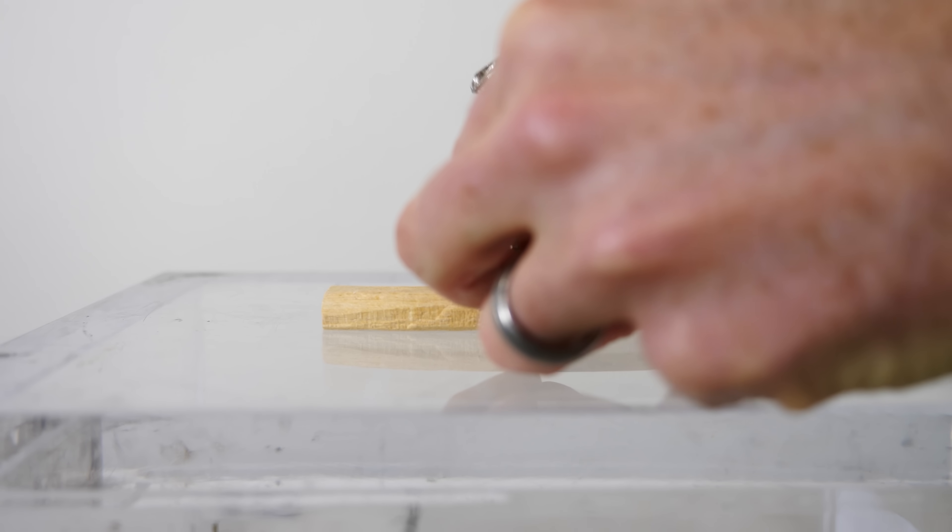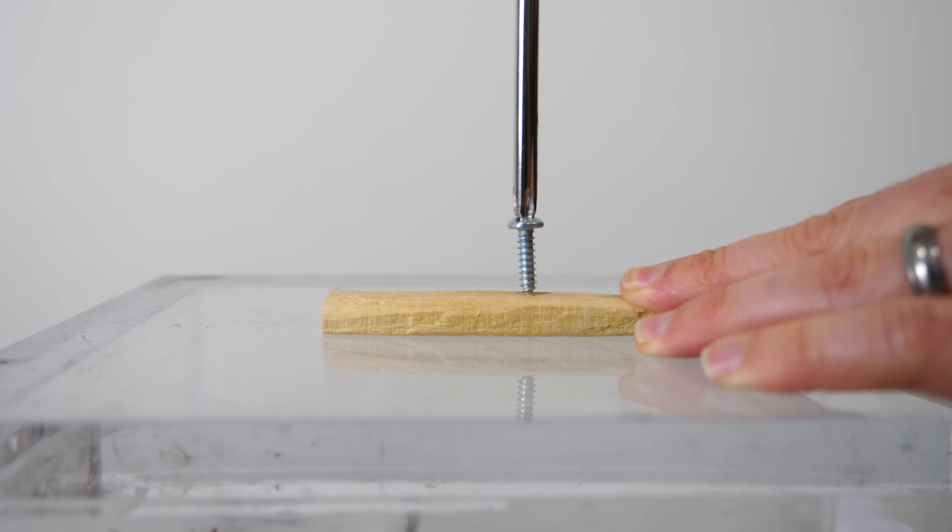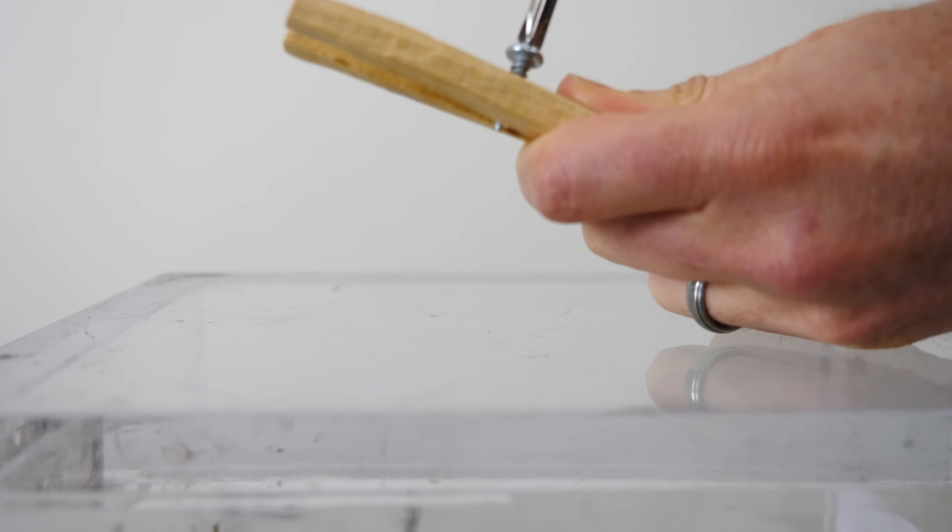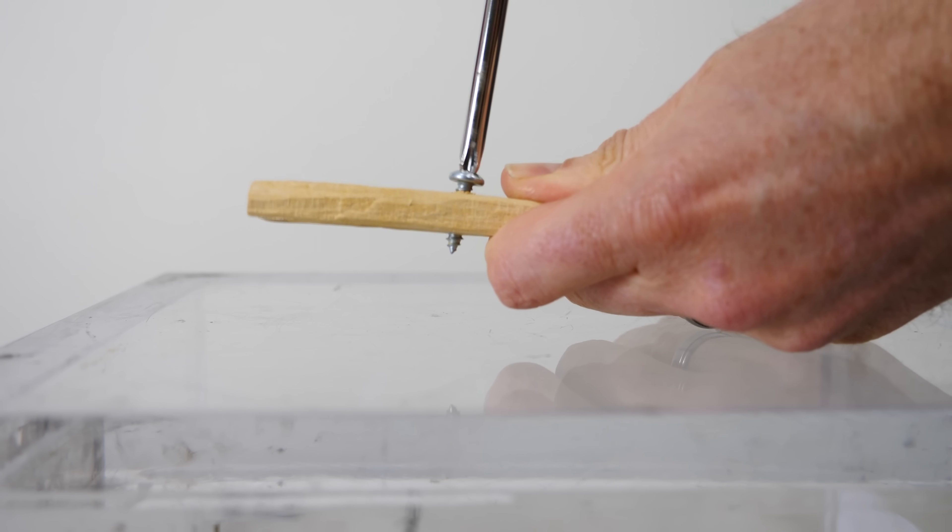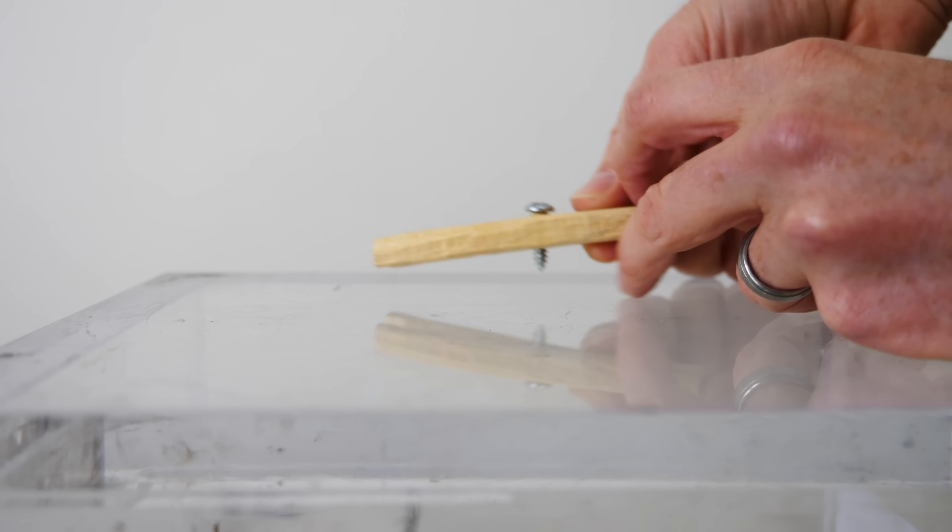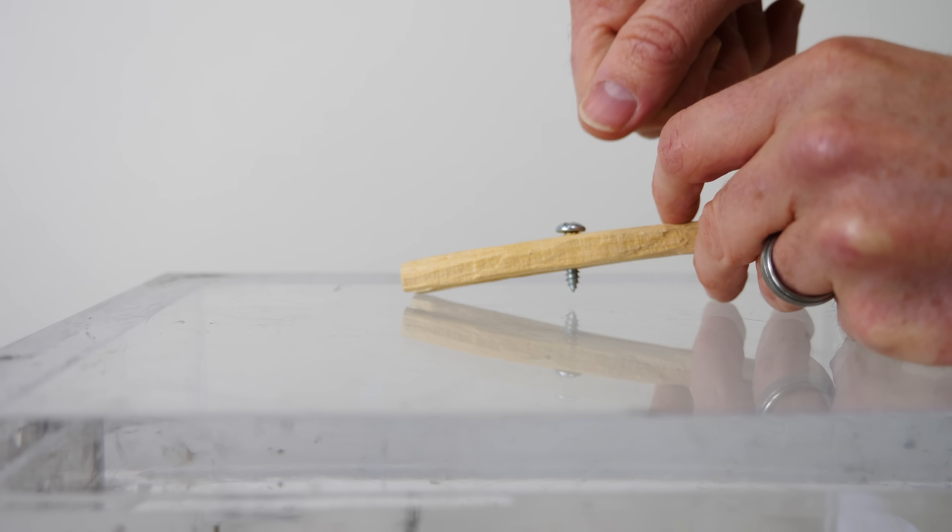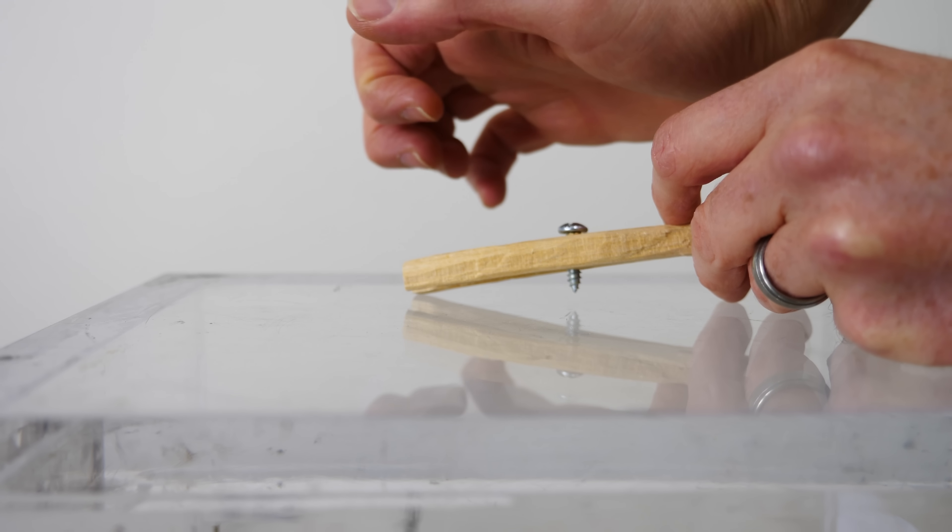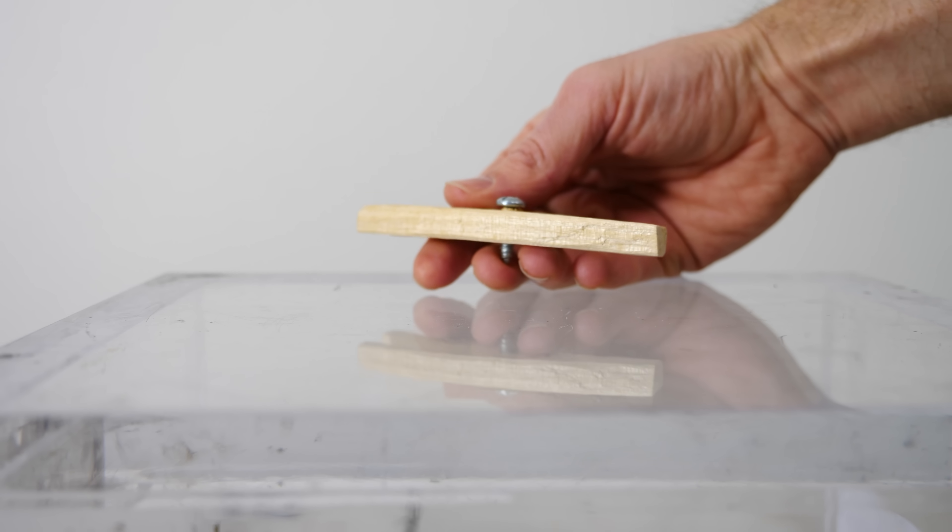But if I take that same screw and just turn it a little bit, it easily goes into the wood. So much that I can actually just screw right through the wood. So isn't that interesting that just with a little bit of force of twisting, I was able to get the screw to go completely through the wood, even more than I could get when I was pushing on it with all my might and I couldn't get it to go into the wood at all. So why does this happen?